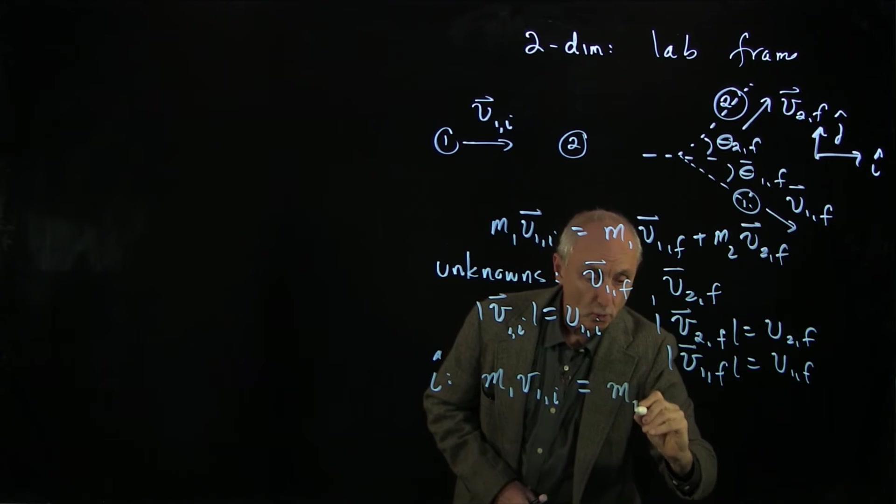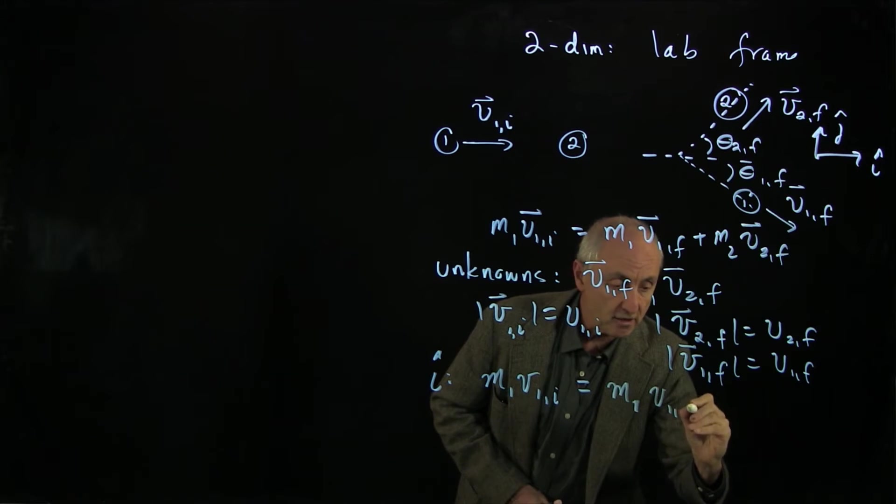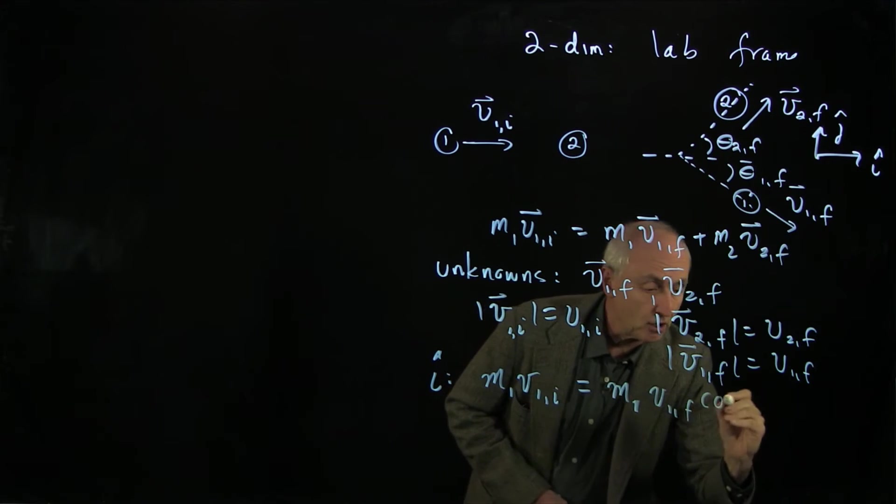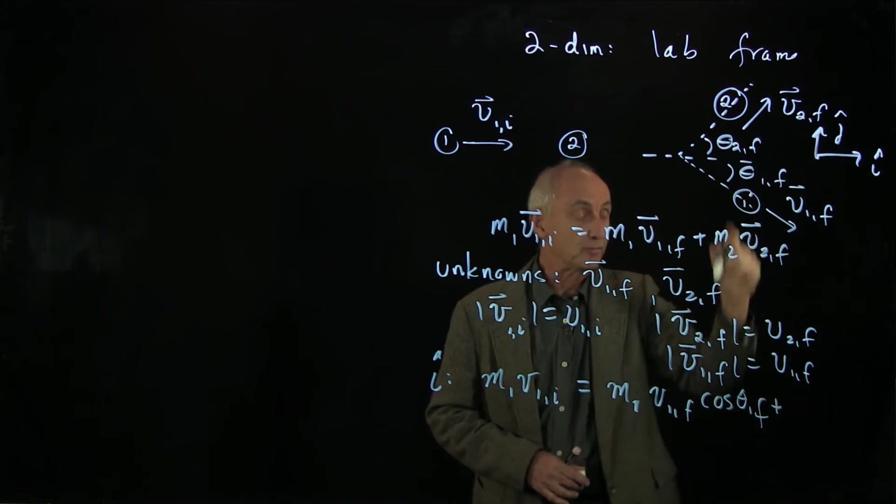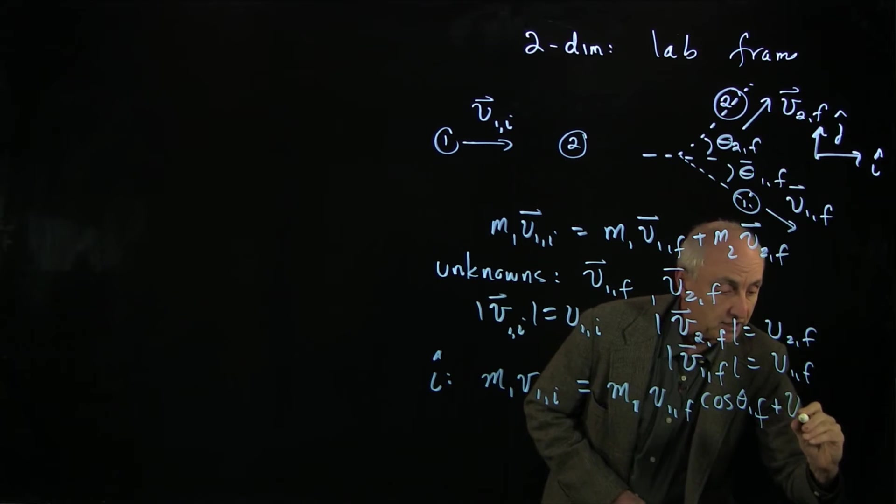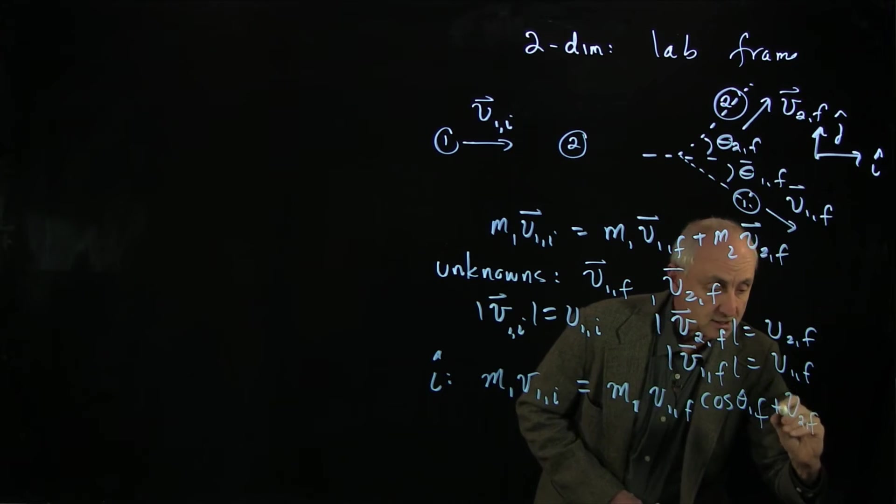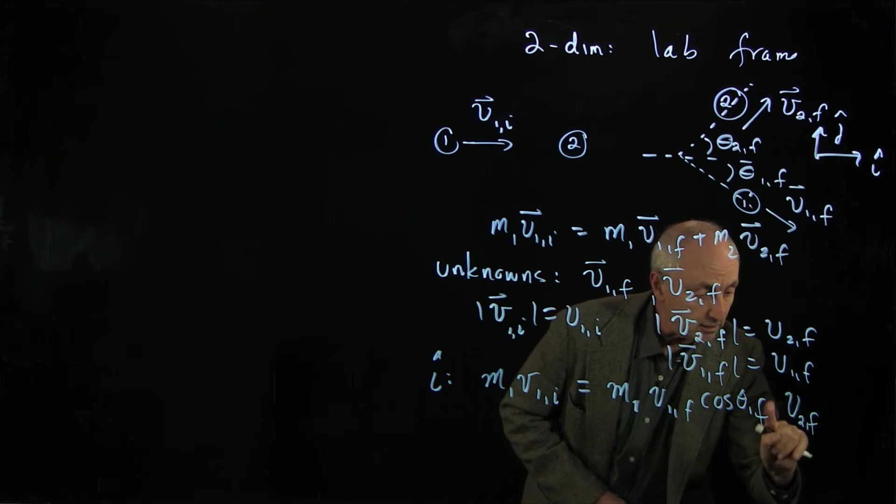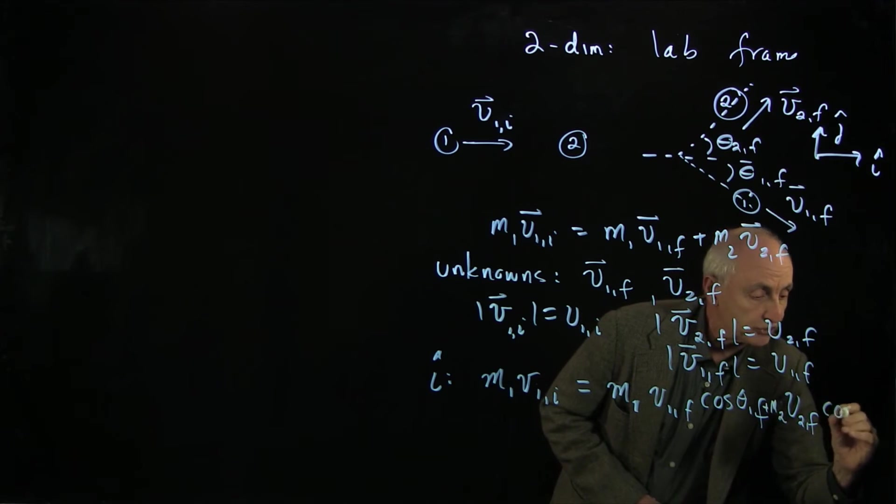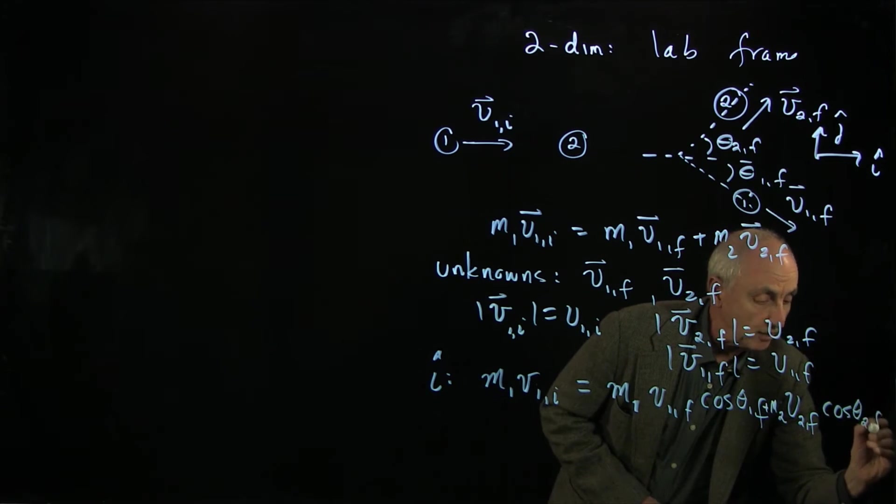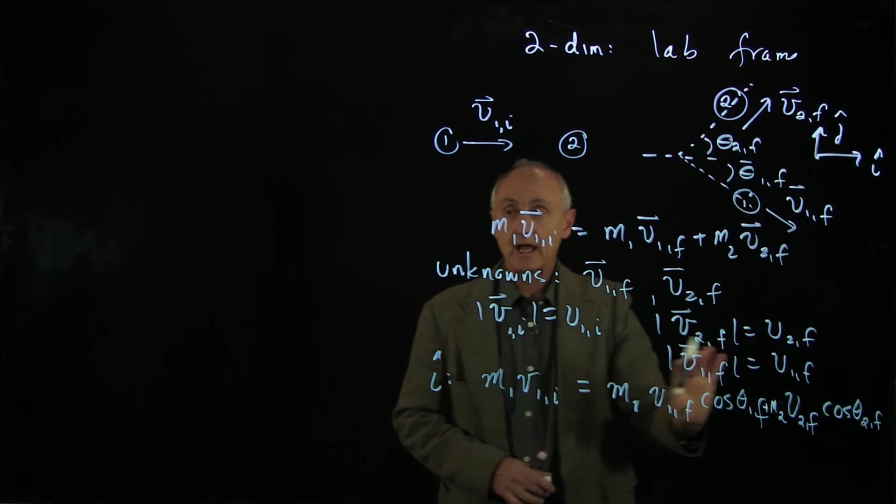of components. So we have m1 v1 final, that's the magnitude, cosine theta 1 final, plus positive sign, because they're both in the positive direction, v2 final magnitude times, we need that little m2, v2 final, cosine theta 2 final. And that is our i hat direction.